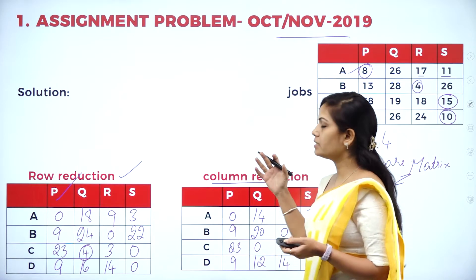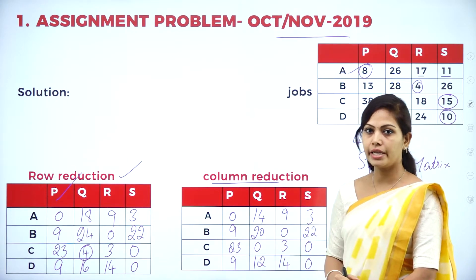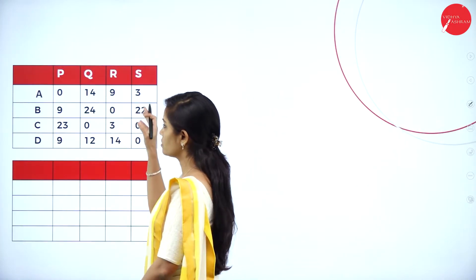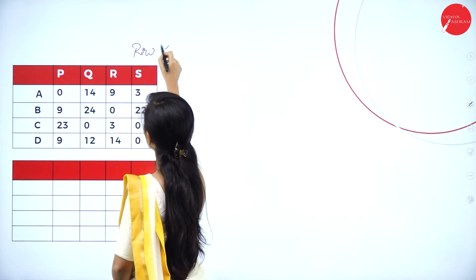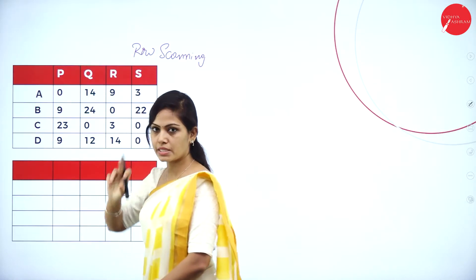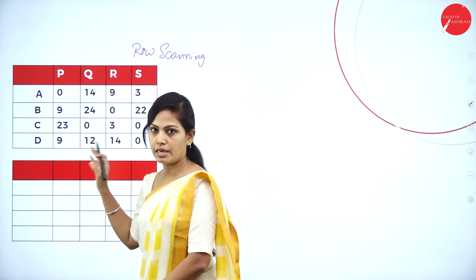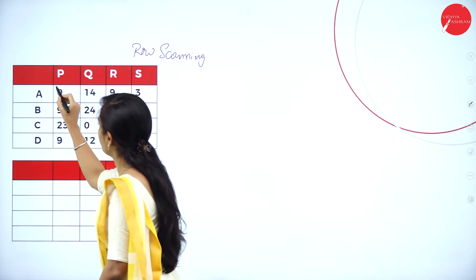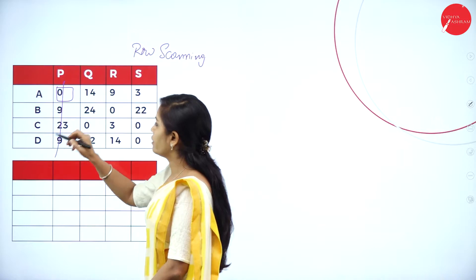The next step is to assign zeros to the right operators using row scanning and column scanning. In row scanning, consider each row: if a row has only one zero, assign that zero — put a square box around it and draw a vertical line through that column. In the first row, there is only one zero, so assign it.